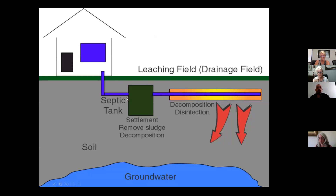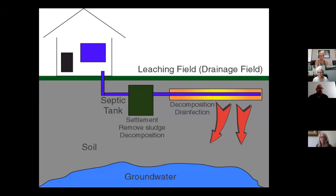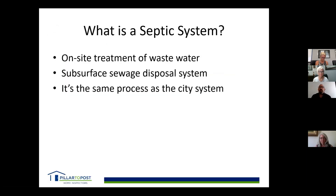Looking at a septic system, the waste line in blue comes out to the septic tank, which will do some settlement and decomposition. From there, the water comes out to your field bed, where it will either drain down through the soil or evaporate up through the soil. It can also get down into the groundwater, which is why it's important that the system is running well.